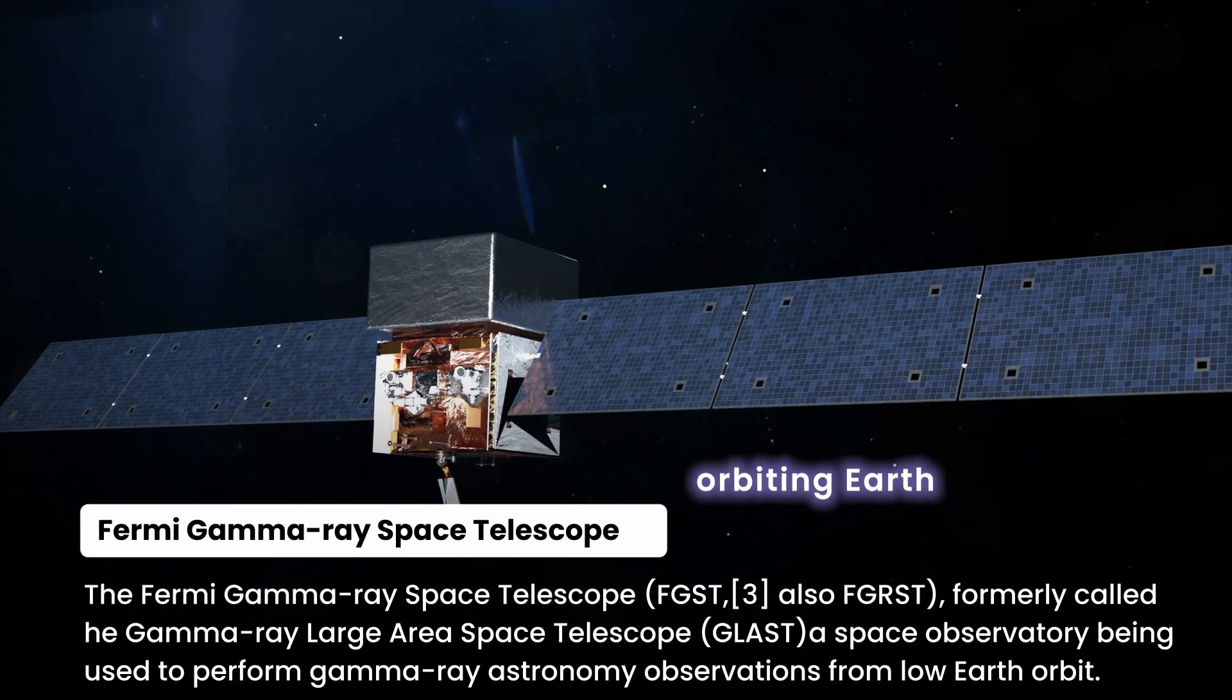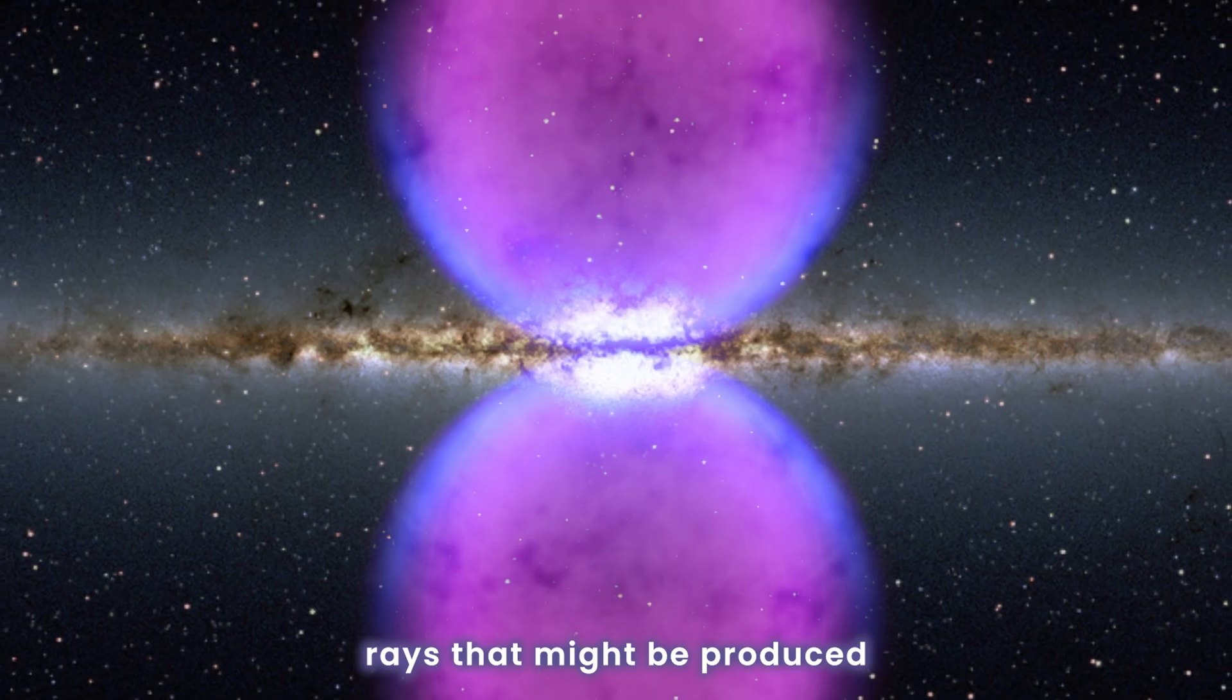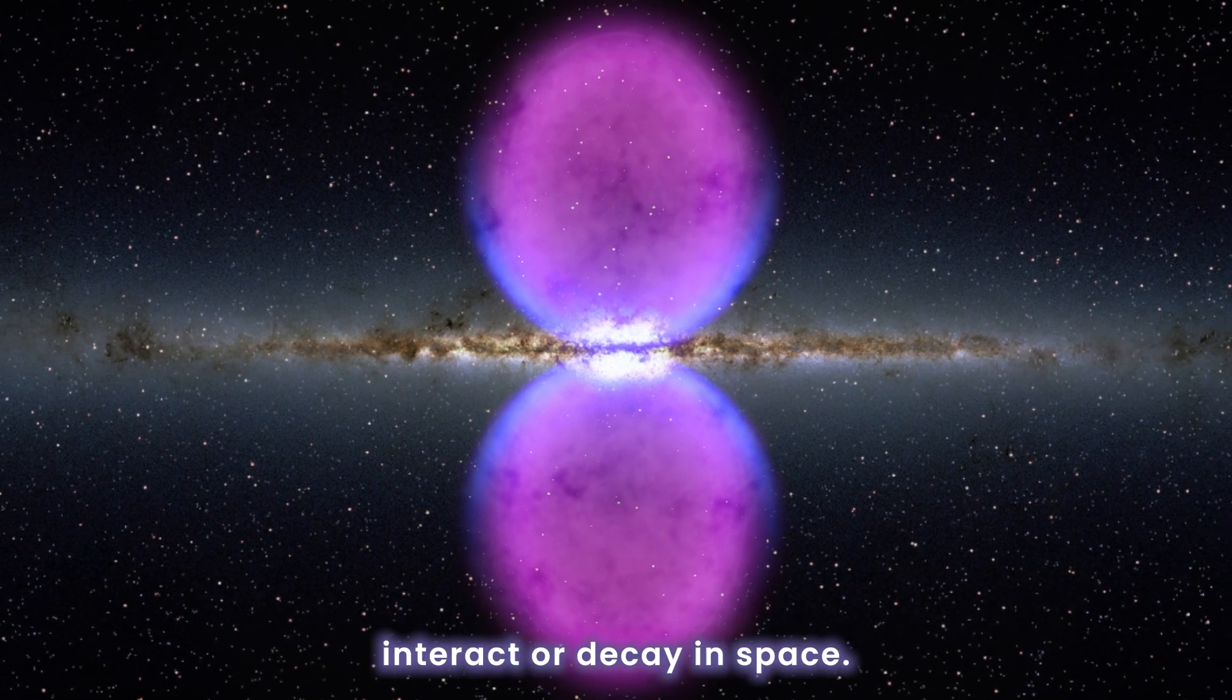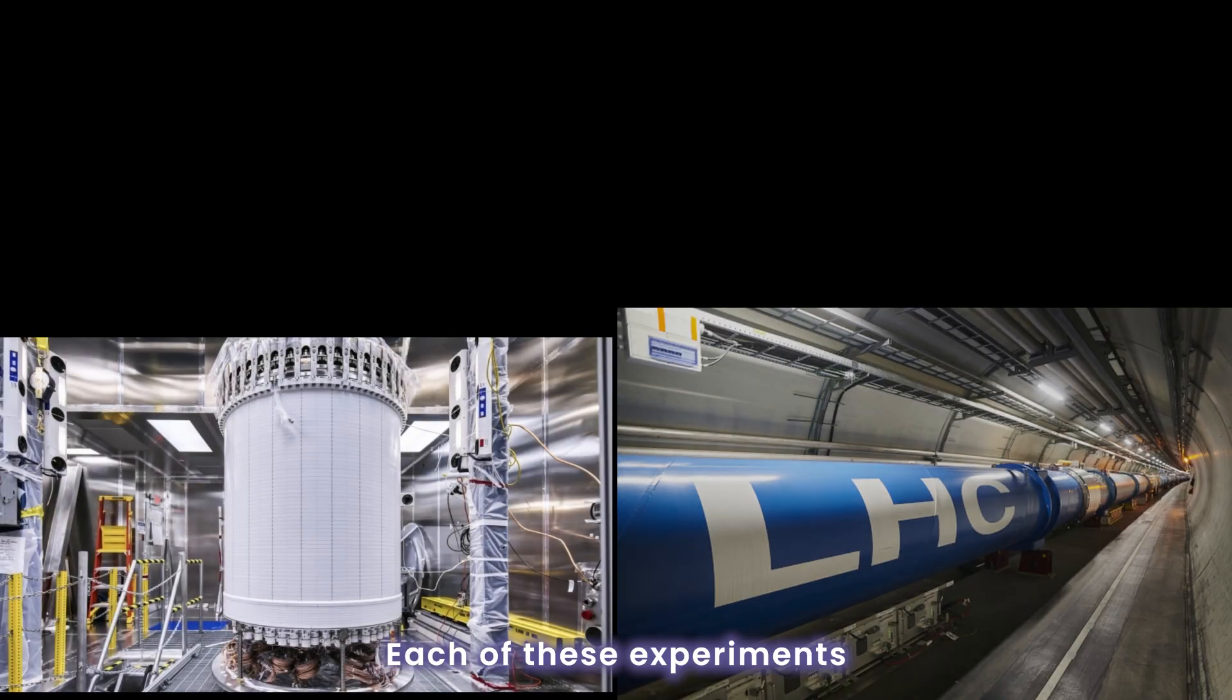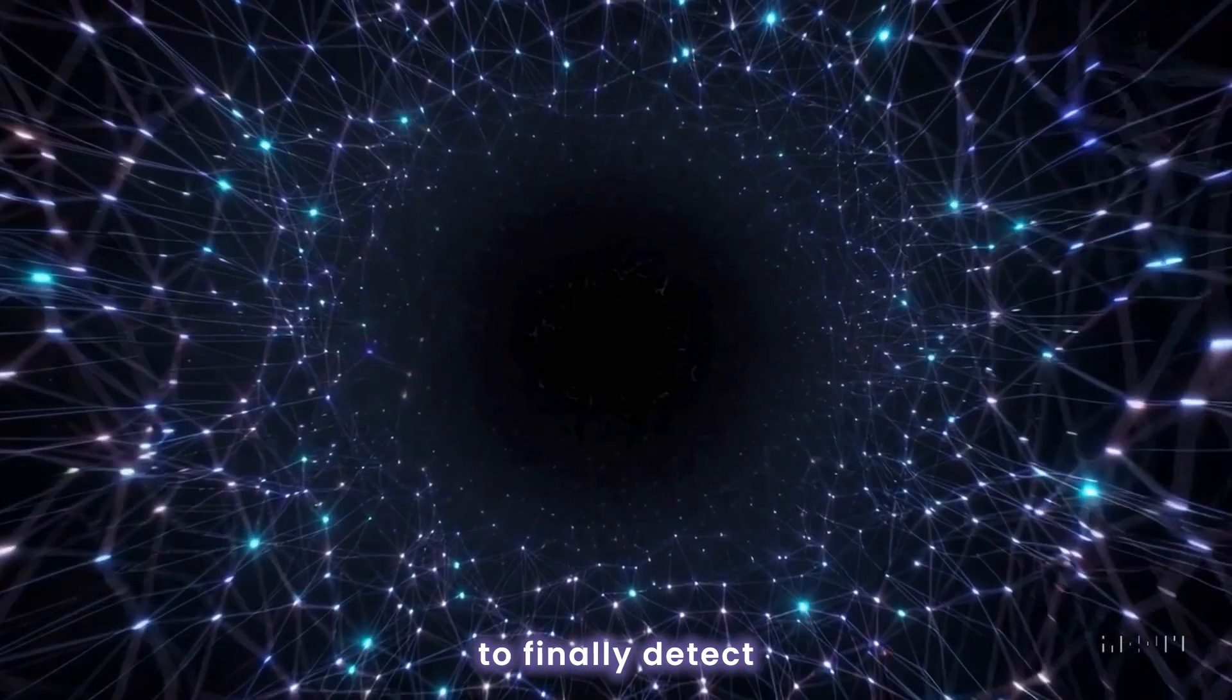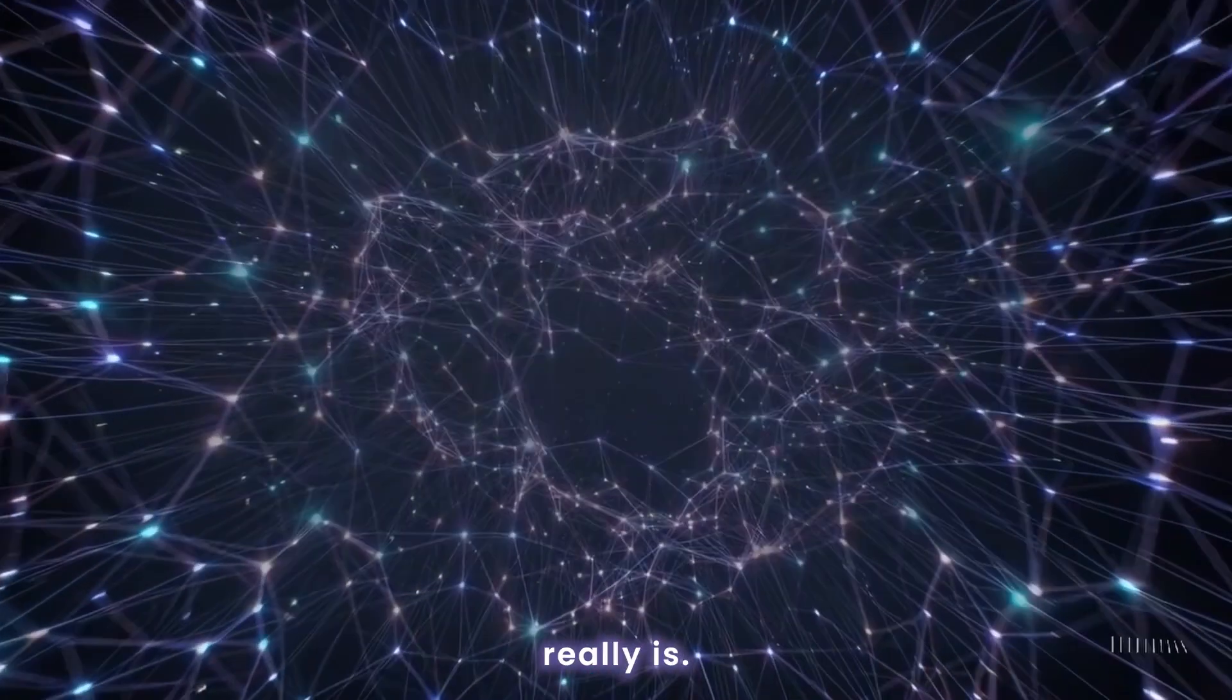Meanwhile, the Fermi Gamma Ray Space Telescope orbiting Earth looks for gamma rays that might be produced when dark matter particles interact or decay in space. Each of these experiments uses a different strategy, but they all share the same goal—to finally detect and understand what dark matter really is.